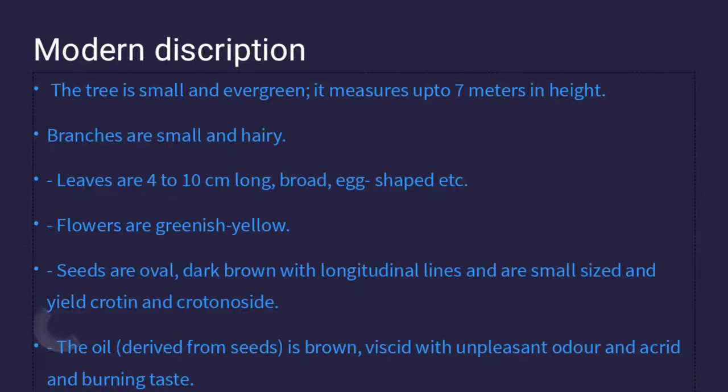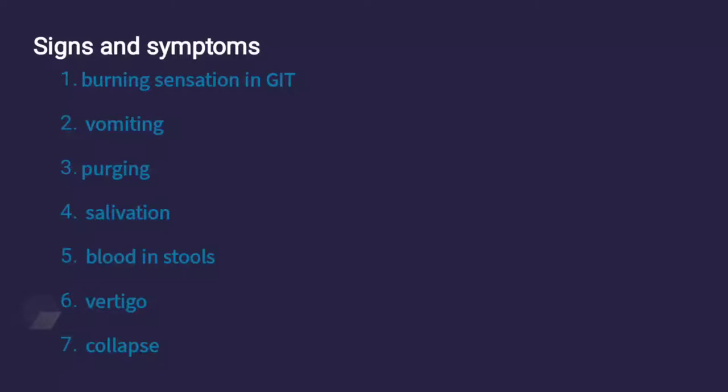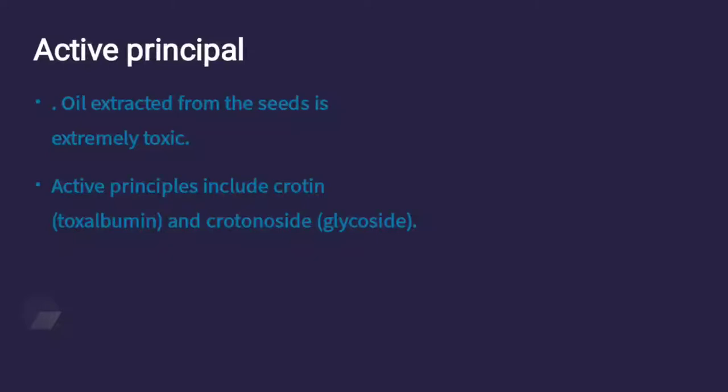Signs and symptoms include burning sensation in the GI tract, vomiting, purging, salivation, blood in stool, vertigo, and collapse. Active principles: the oil extracted from the seeds is extremely toxic. Active principles include Crotin, Toxalbumin, and Crotonosid glycoside.